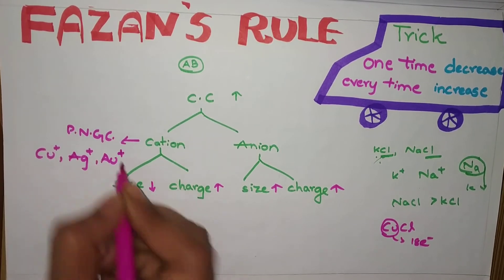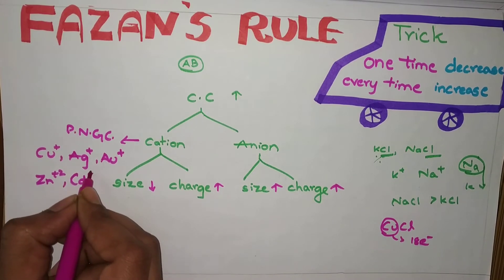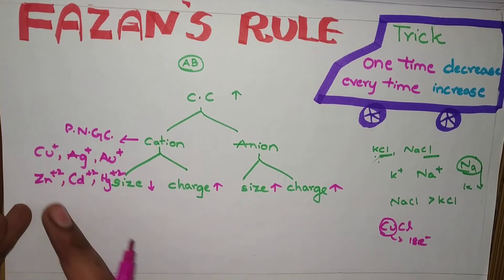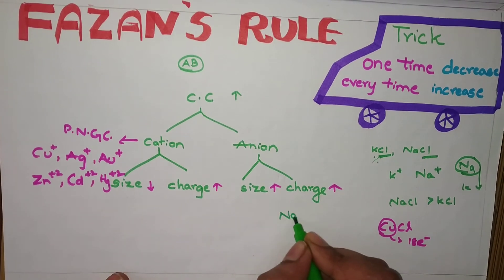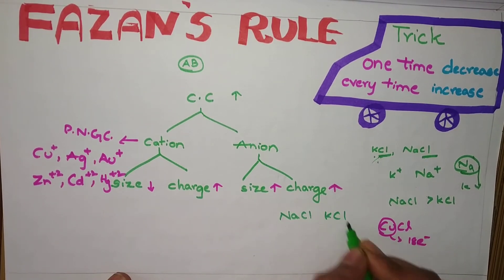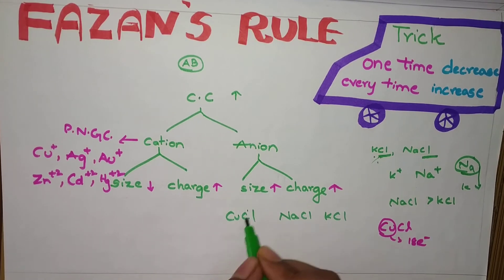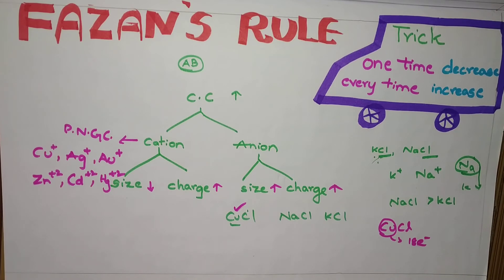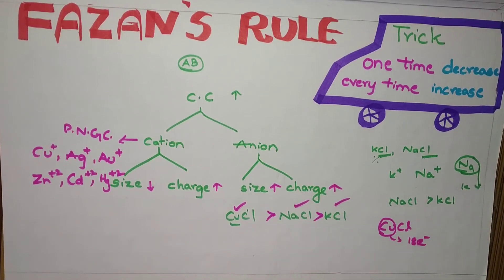See, these are the examples. Zn2+, Cd2+, Hg2+. Whenever, in the question, they give this compound, give priority to this. Suppose, let's say, NaCl, KCl, CuCl is given. What you have to take? First, give priority to this. This one, you give priority. And next, as usual, this one and this one. Like this, you have to do.